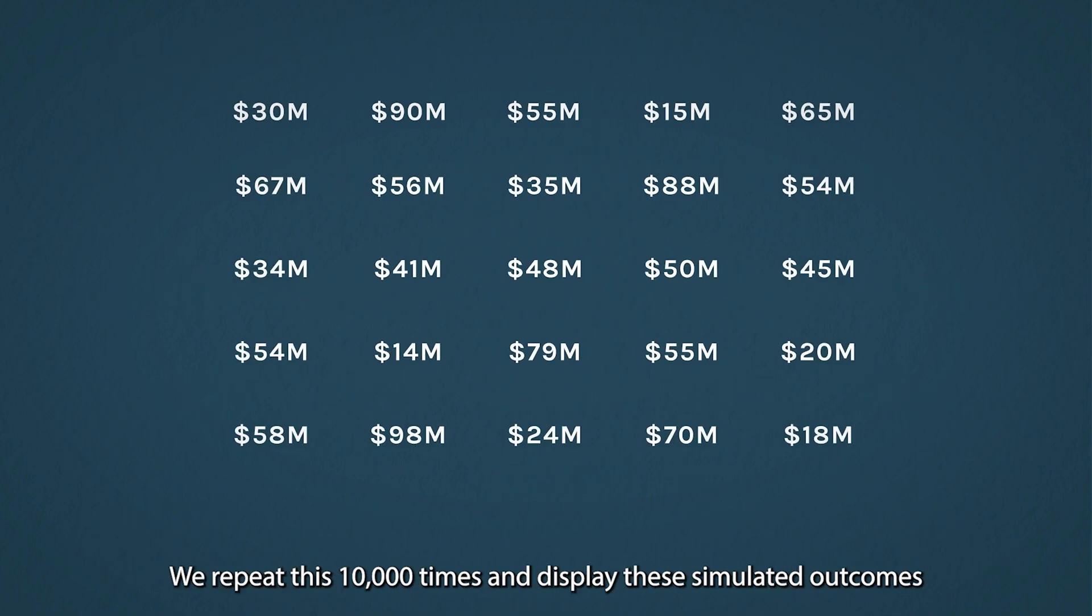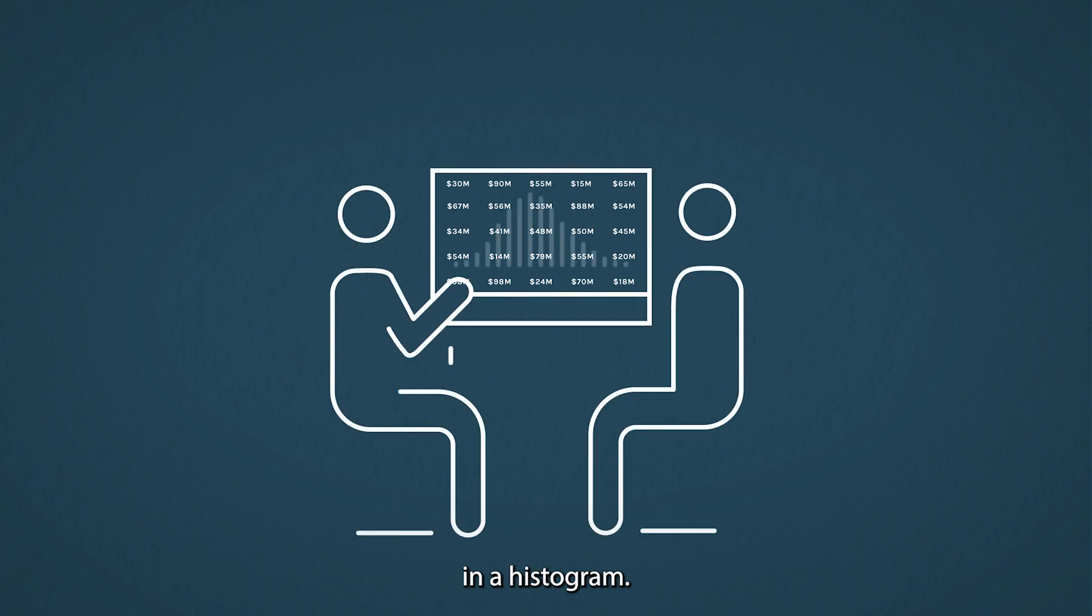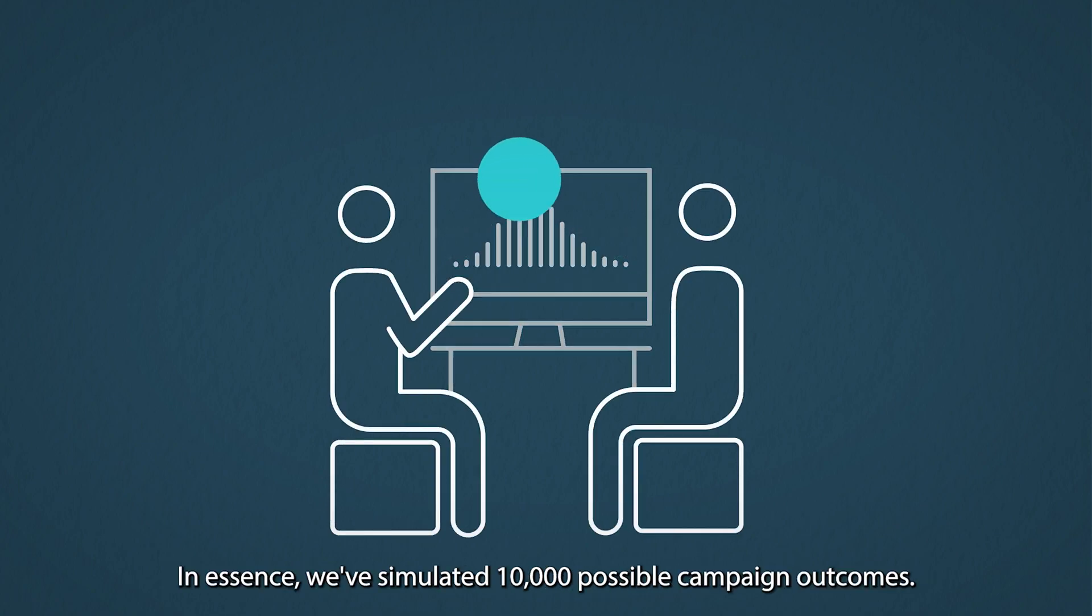We repeat this 10,000 times and display these simulated outcomes in a histogram. In essence, we've simulated 10,000 possible campaign outcomes.